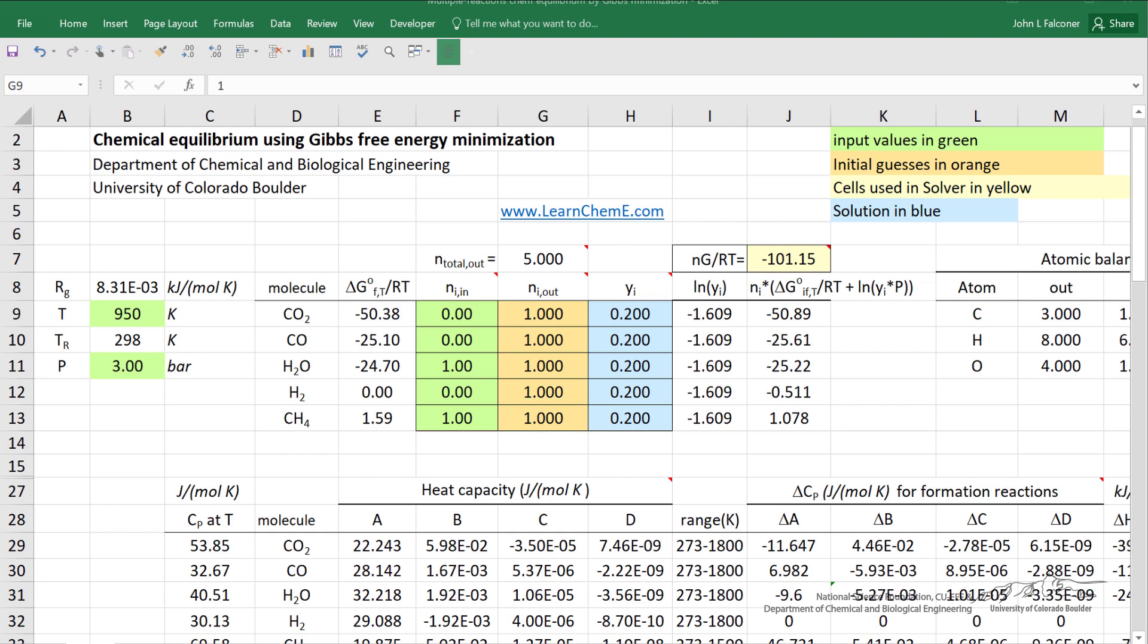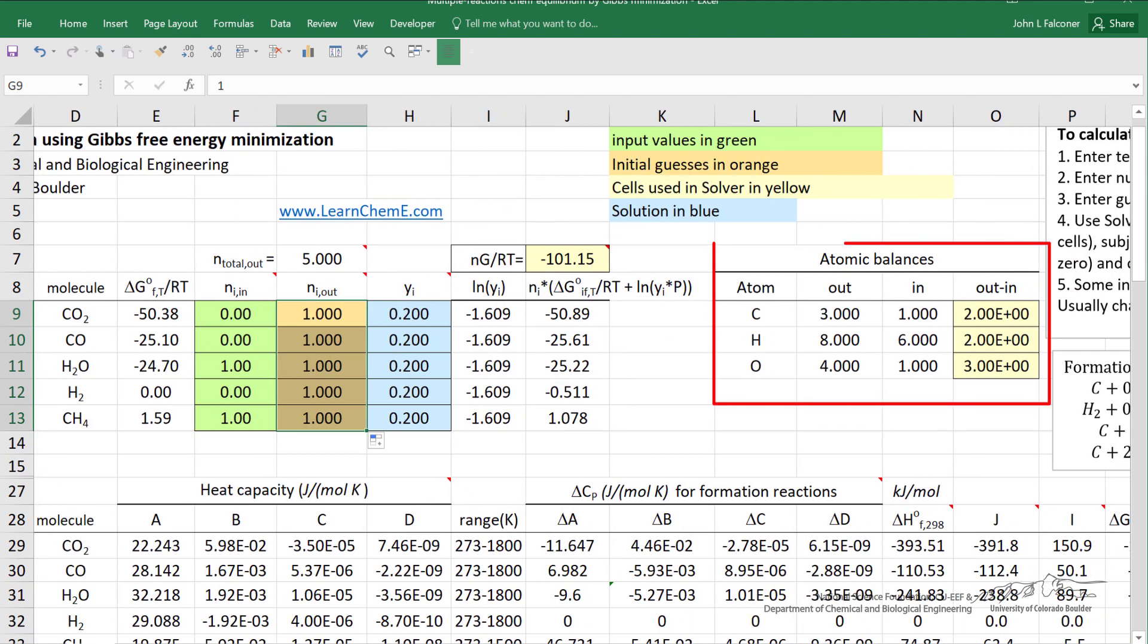We minimize it with the constraints that are shown here, namely that the number of carbon atoms coming in - because we have one mole of methane, there's one mole of carbon atoms, one mole of water, one mole of oxygen atoms, and because one mole of water plus one mole of methane is six moles of hydrogen atoms. The constraints that we entered in the solver is that carbon atoms leaving should equal carbon atoms entering, likewise for hydrogen and oxygen.